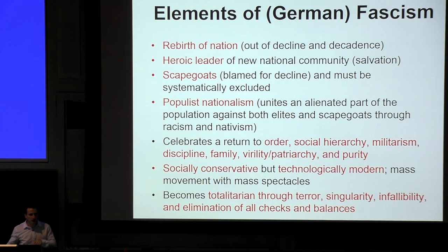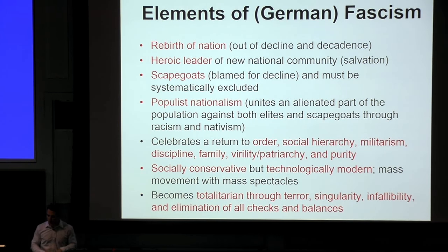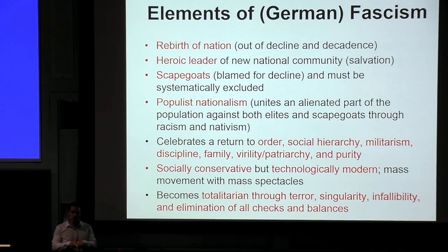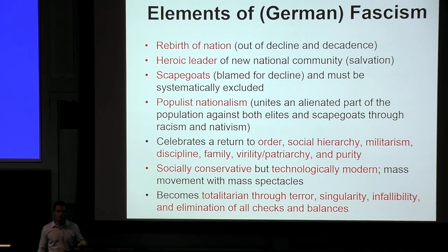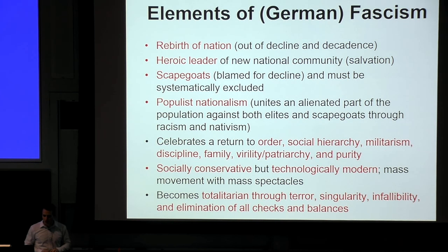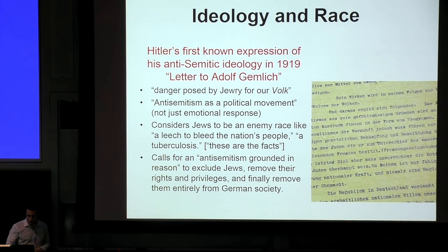Fascism changes to something else when terror becomes the way in which the government functions. In the case of Germany this happens very early — in 1933 there's a crisis moment, a political crisis: the fire in the German parliament building, the Reichstag. It's blamed on the communists, but it gives Hitler the ruse to eliminate all the checks and balances in place in the democratic Weimar Republic. Fascism, in order to accelerate its form of government as terror, needs this moment of crisis to get rid of freedoms. When it does so, it changes from fascism to totalitarianism.